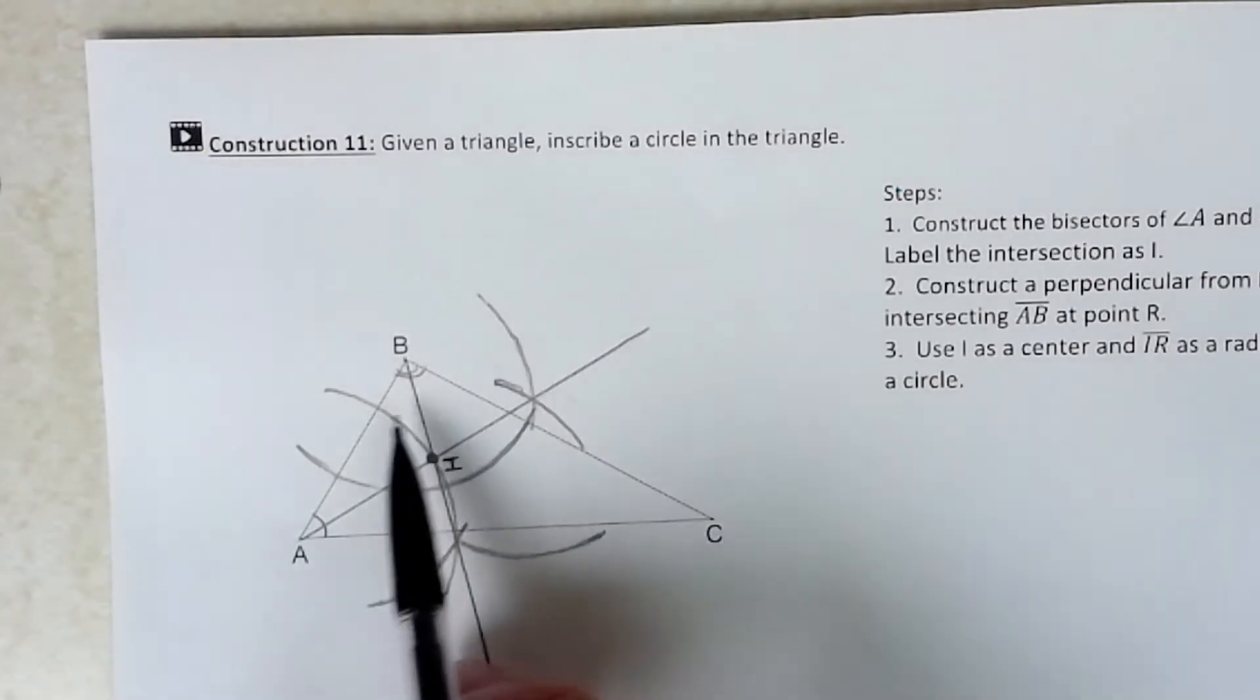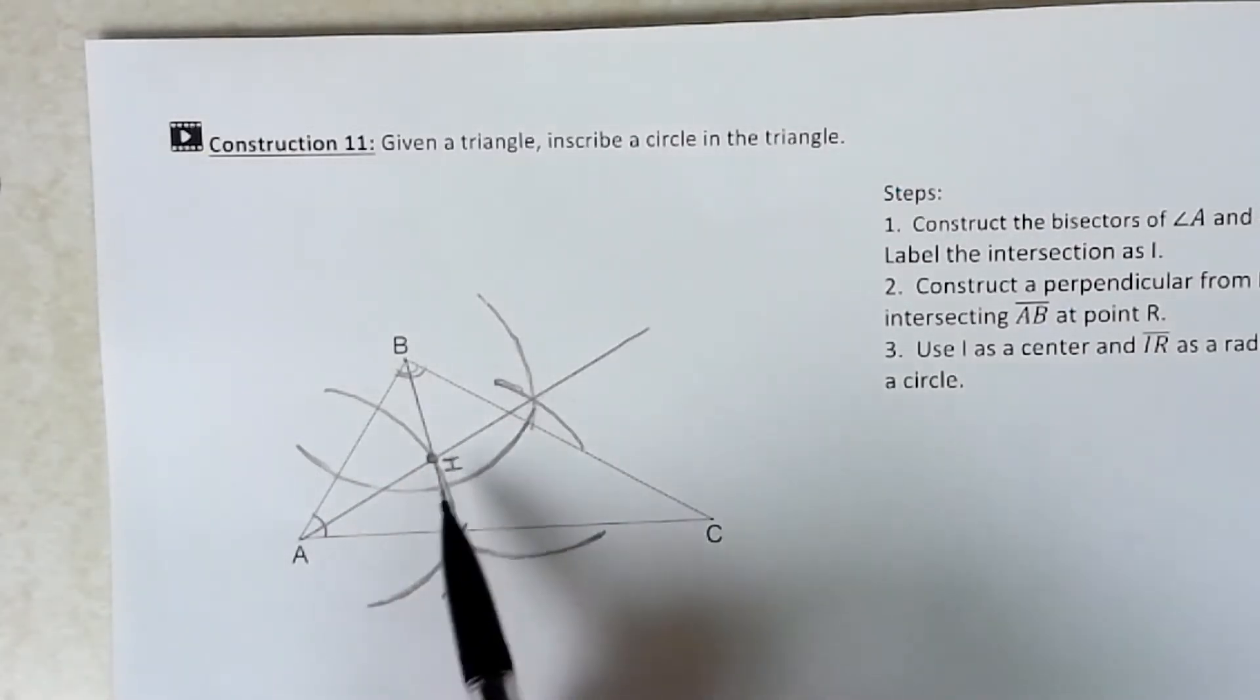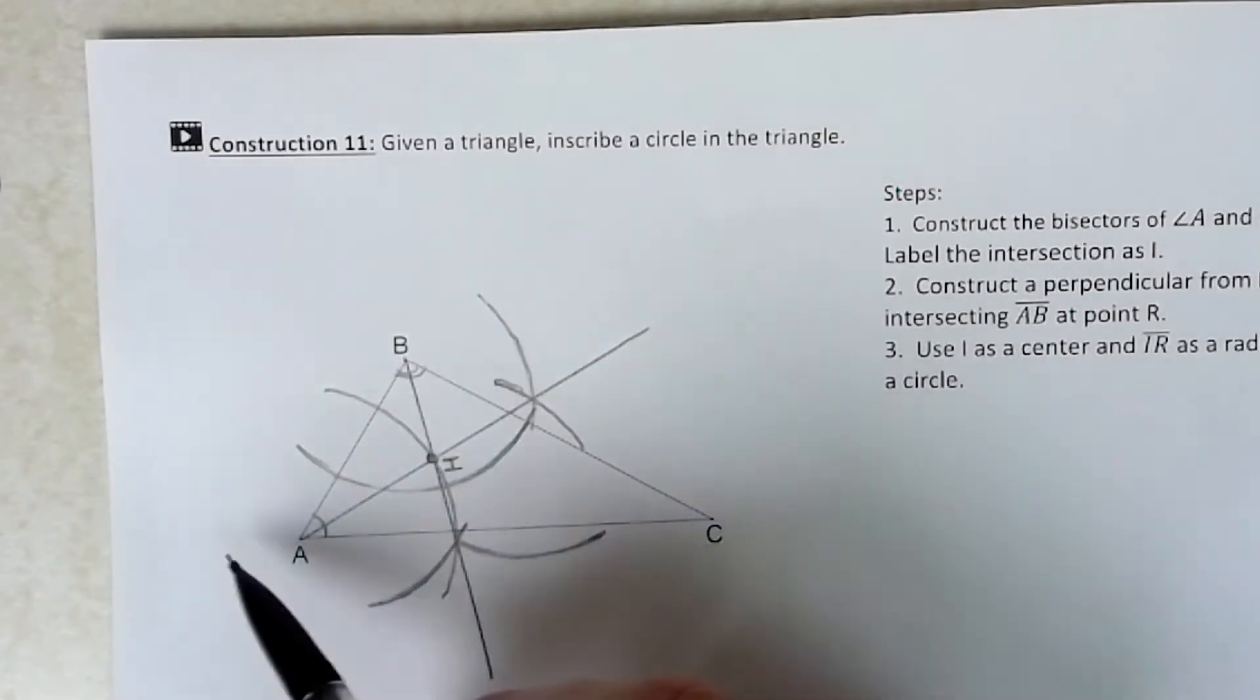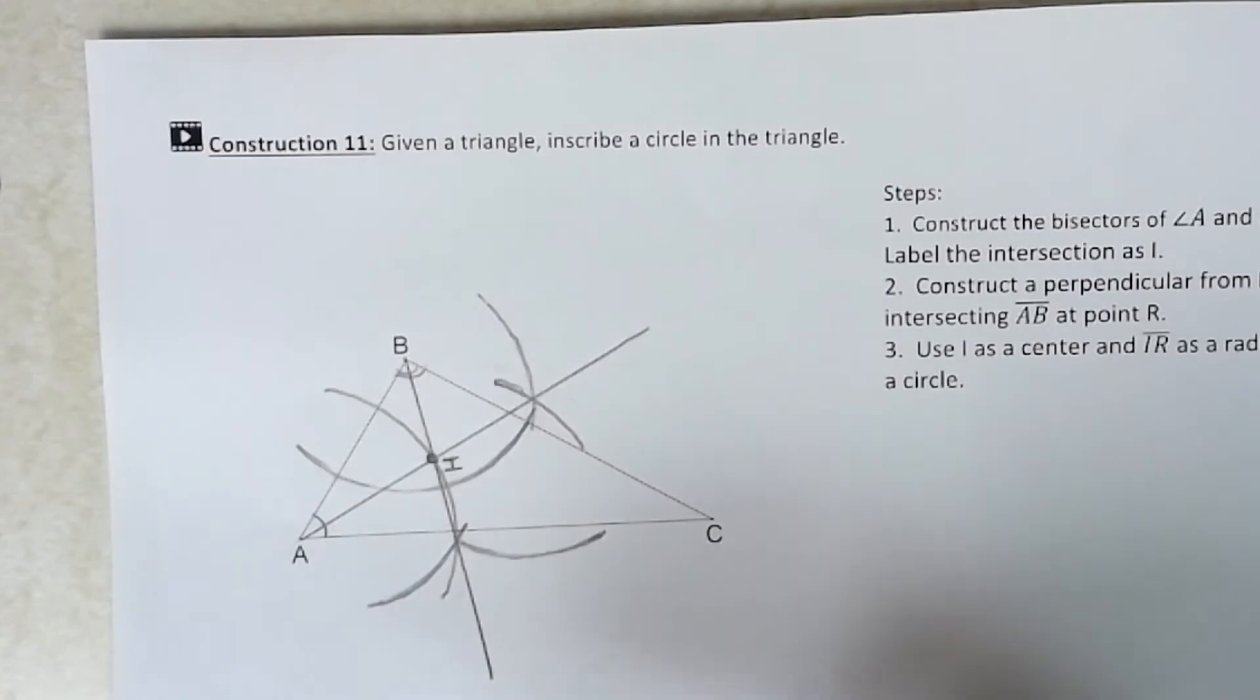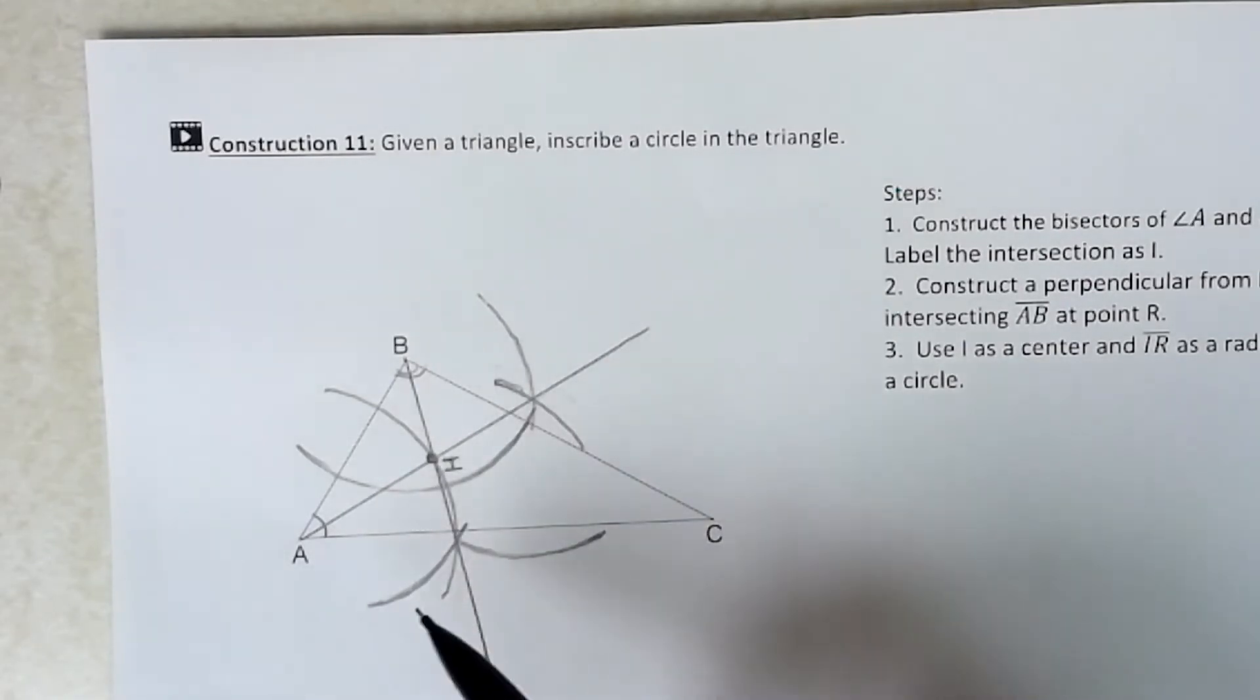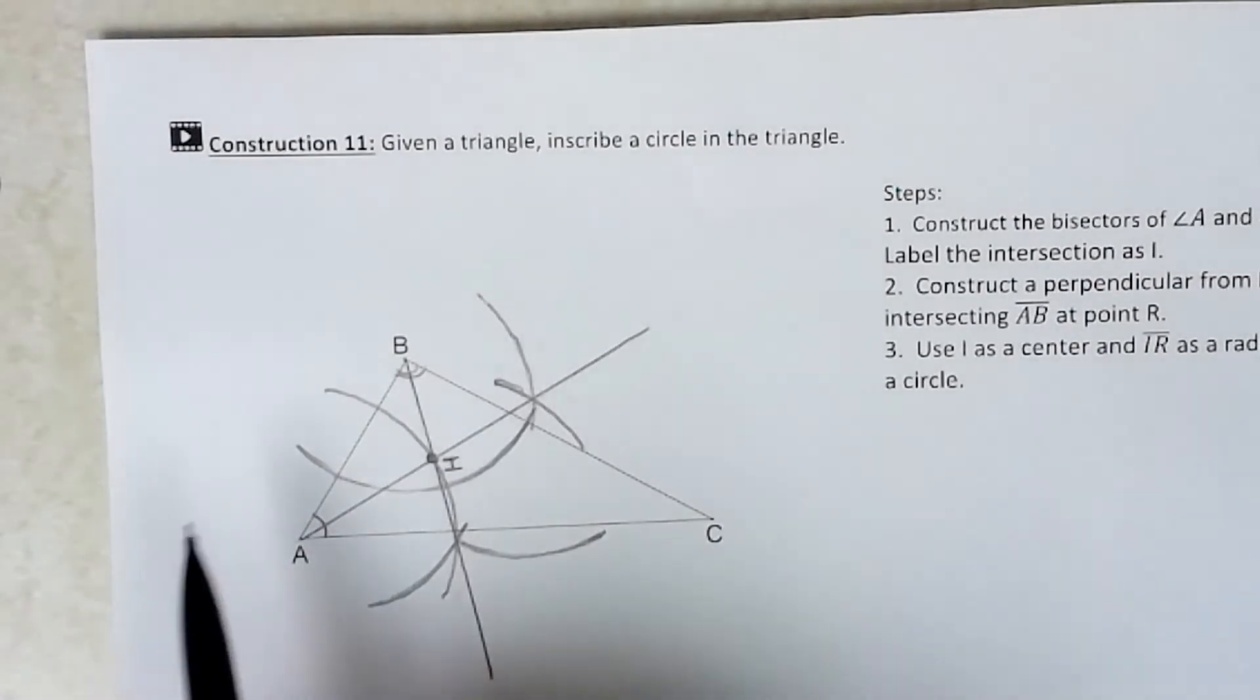Ultimately if I'm trying to put a circle right inside and inscribe it within the triangle, I need to treat AB, BC, and AC as tangents to the circle. We know that a radius and a tangent should be perpendicular to one another.